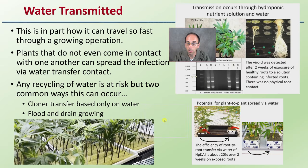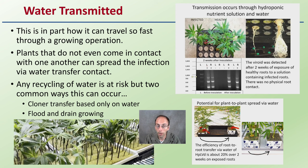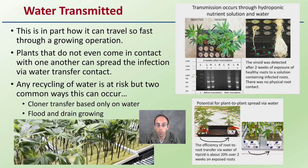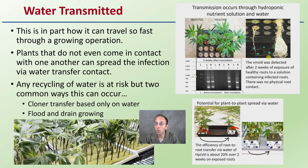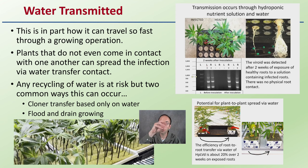Water transmission is a little scary — this is in part how it can travel so fast through a growing operation. Plants do not even have to come into direct contact with one another; it can spread via water transfer contact. Any recycling water is at risk. In a cloner tray, even with physical separation between plants, a water connection allows a healthy plant to become infected from an unhealthy one. The viroid was detected after just two weeks of exposure of healthy roots in a solution containing infected roots, with no physical root contact.